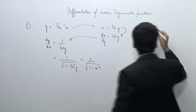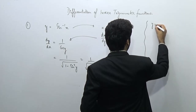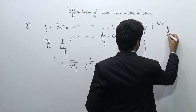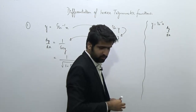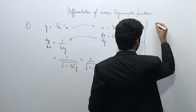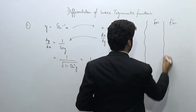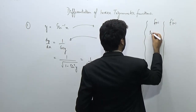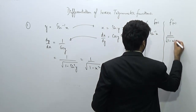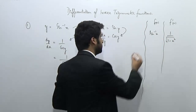We can write this as: if y equals sine inverse x, then dy/dx equals 1 upon √(1 − x²). In function notation, if f(x) = sin⁻¹x, then f'(x) = 1/√(1 − x²). Remember this — it is the first in our list.